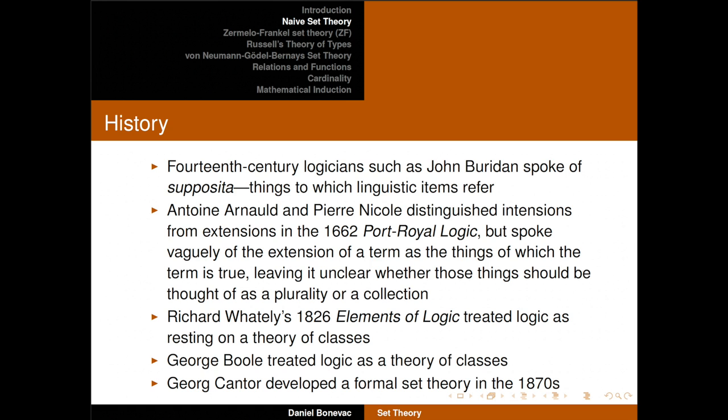Something like a set or a class. It was really Richard Whately's 1826 book, Elements of Logic, that treated logic as resting on a theory of classes. George Boole took that idea and developed it into a mathematical theory based on the theory of classes — really a series of theories because he couldn't quite get it right. At any rate, he saw logic as ultimately a theory of classes. Georg Cantor then developed a formal set theory in the 1870s.